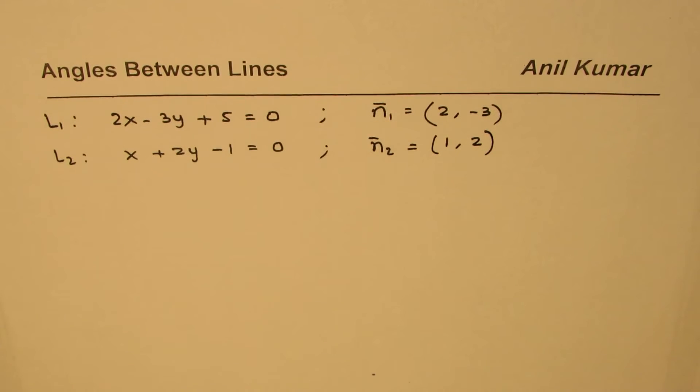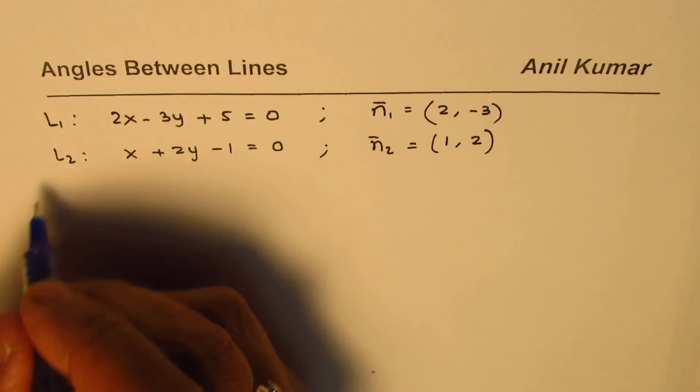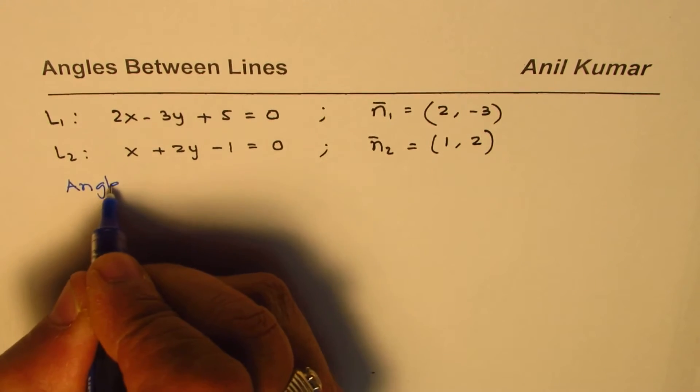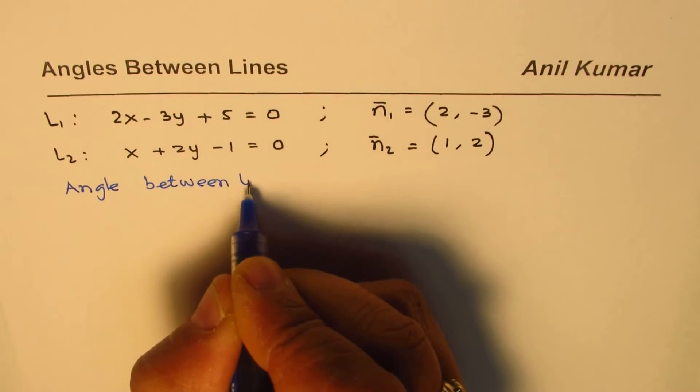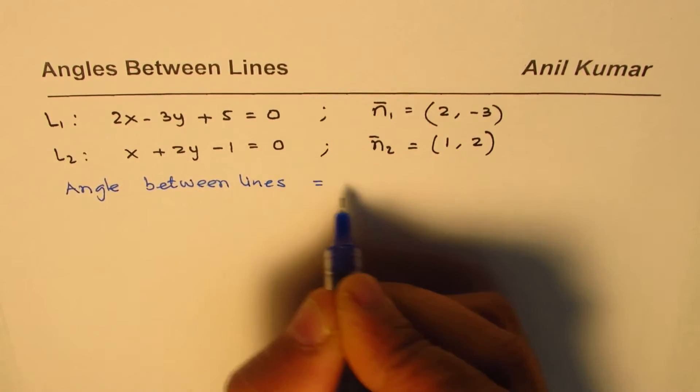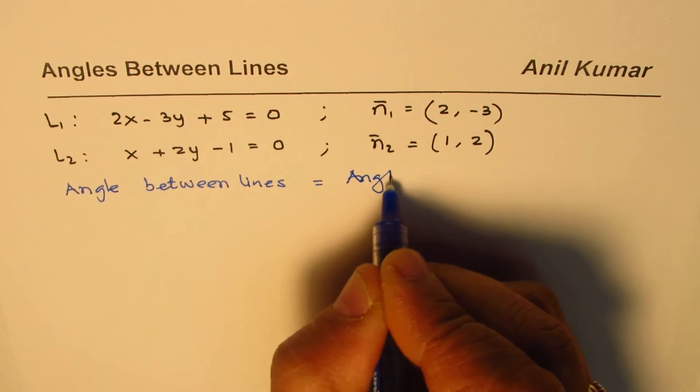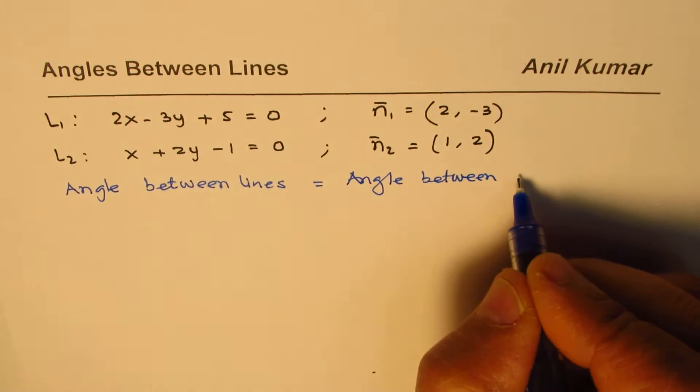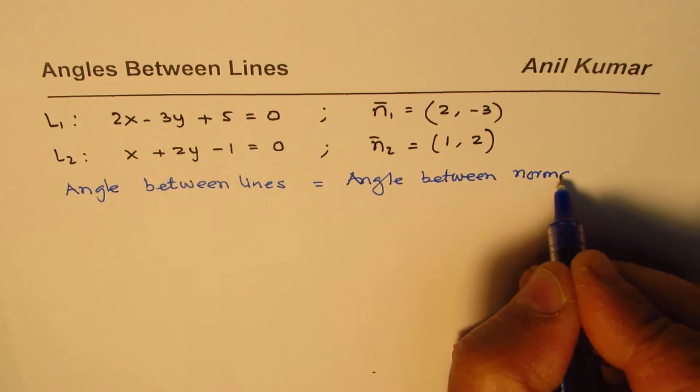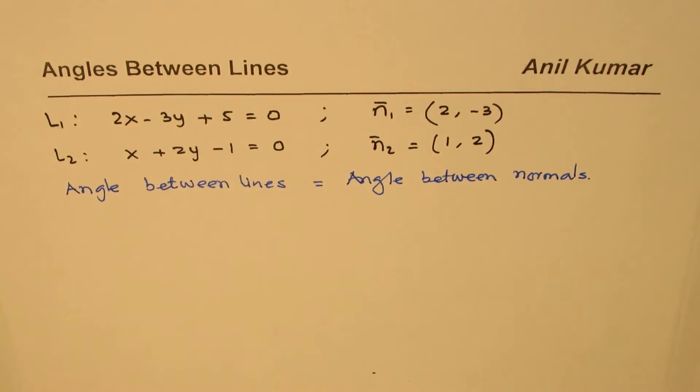Now the angle between the lines should be the same as the angle between the normals. So we can think about it like this: angle between lines is the same as angle between their normals. So that is the concept.